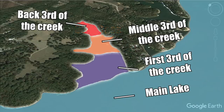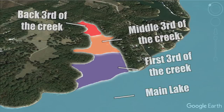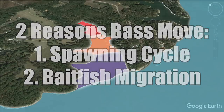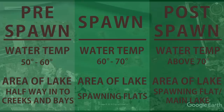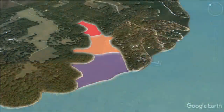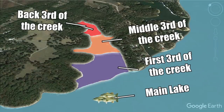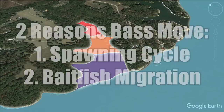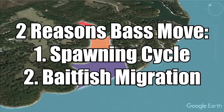Why would bass actually want to move from one part of a creek to another rather than just staying in the same place year-round? There are two main drivers of bass movement: the spawning cycle and baitfish migration. As most of you know, bass spawn in the spring in shallow water and shallow pockets. In winter, many bass sit near the main lake close to deep water, but as they prepare to spawn they move into creeks to find shallow, protected pockets that warm up quicker — transitioning from the main lake to the first third, middle, or back of the creeks.